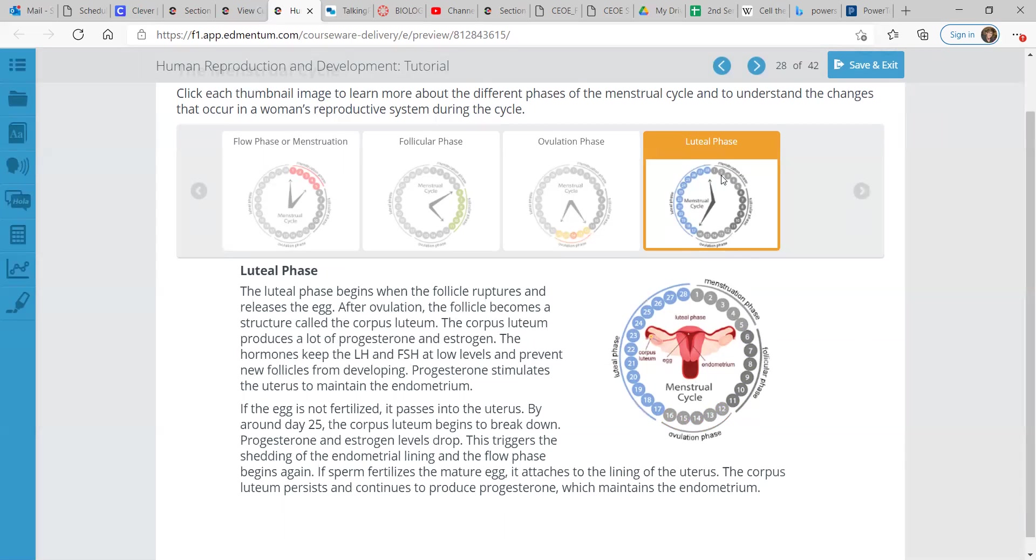This triggers the shedding of the endometrial lining and the flow phase begins once again. If sperm fertilizes the mature egg, it attaches to the lining of the uterus. The corpus luteum persists and continues to produce progesterone, which maintains the endometrium.